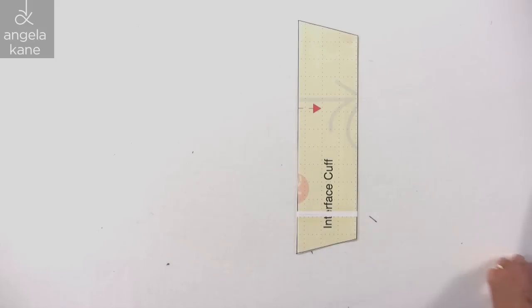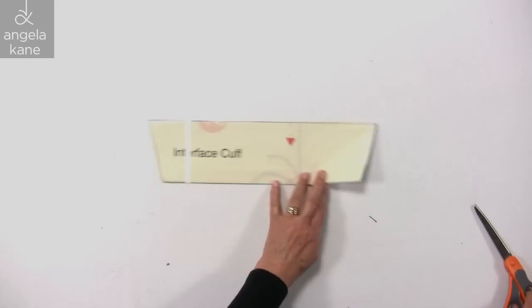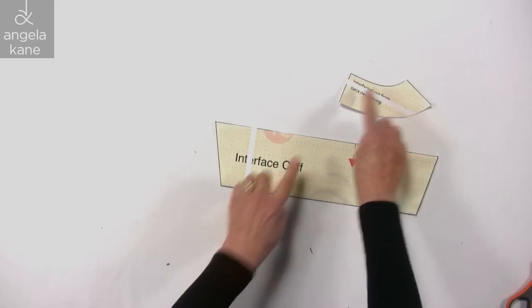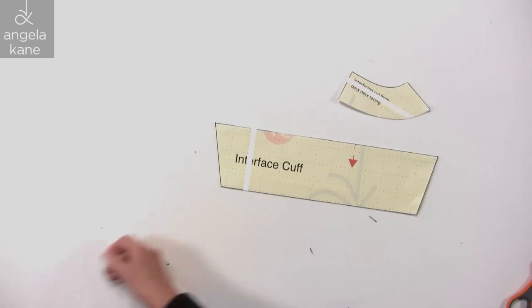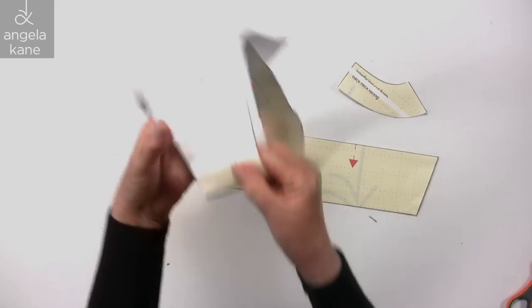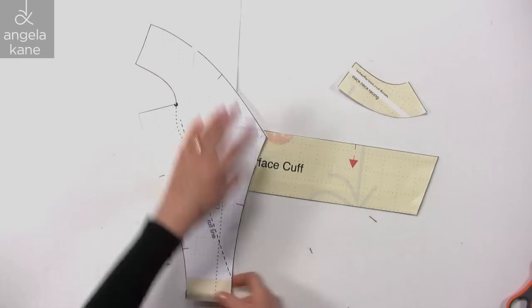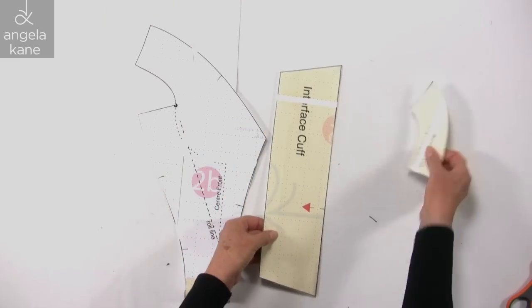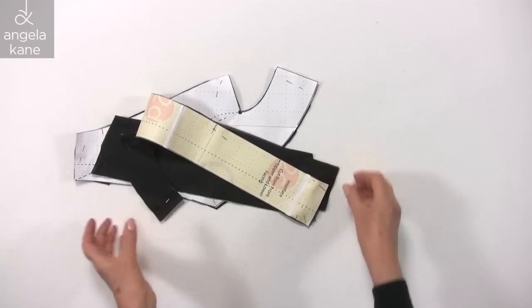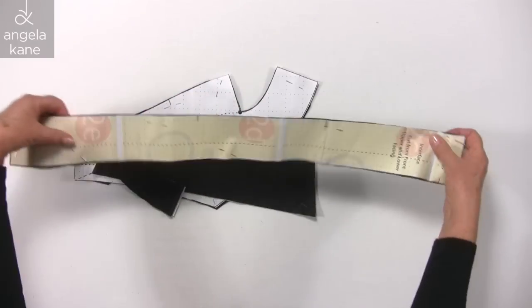So that's three patterns to cut out of interfacing. This is placed on a fold. So all the interfacing is now cut out.